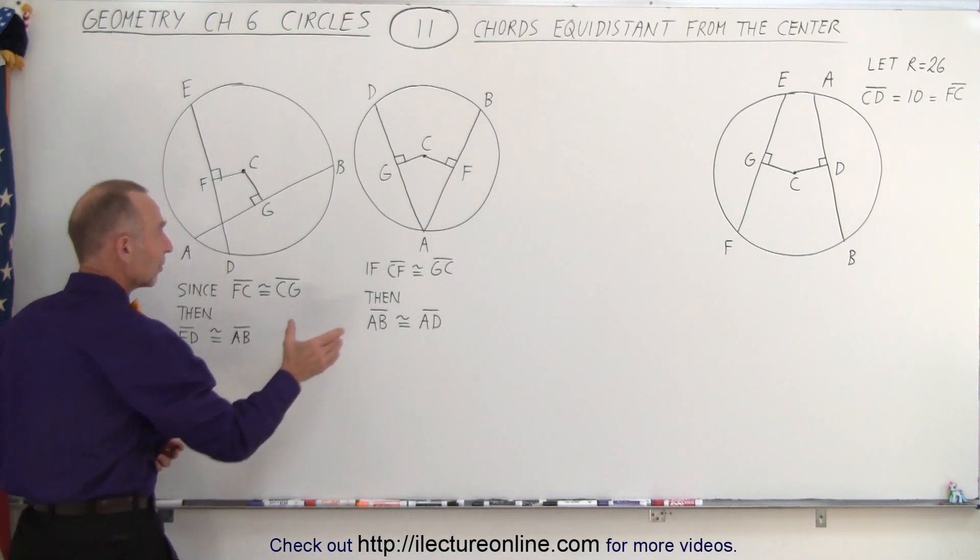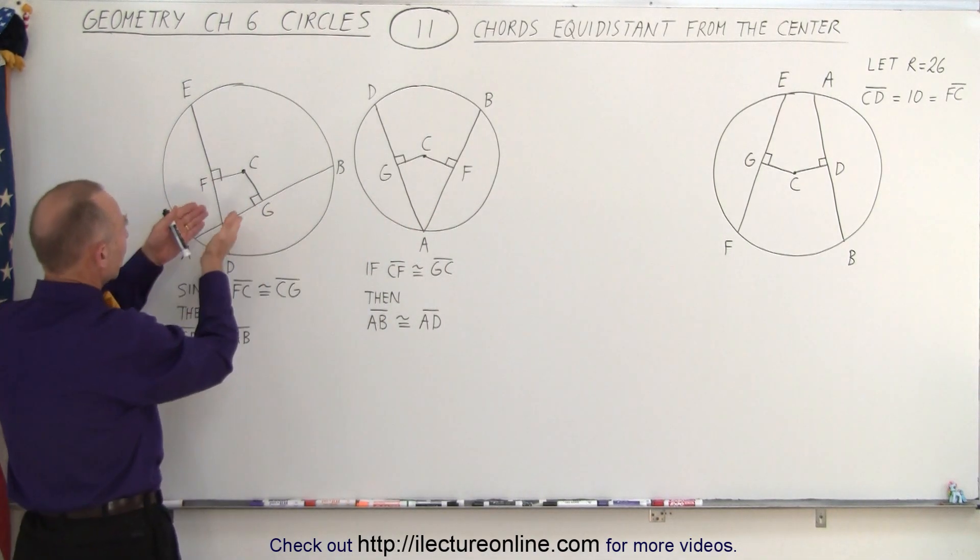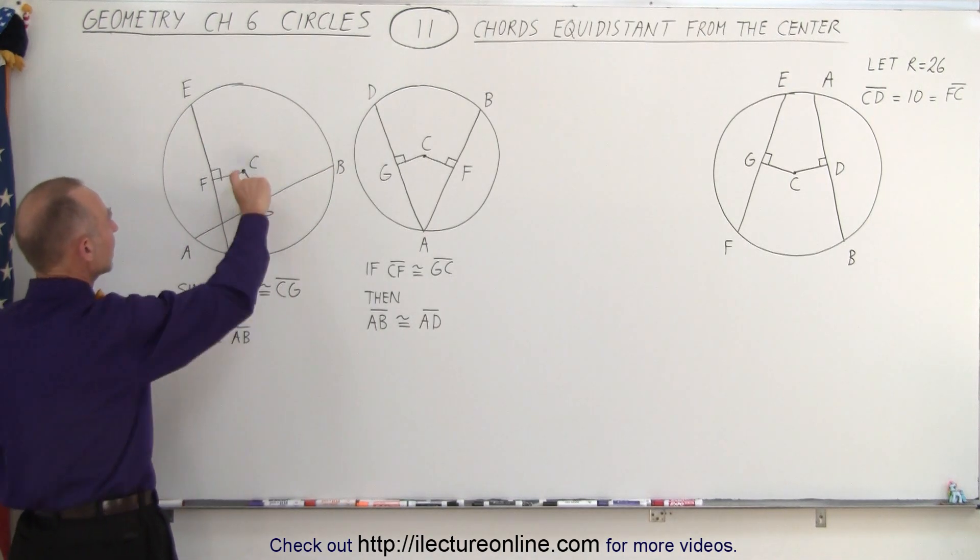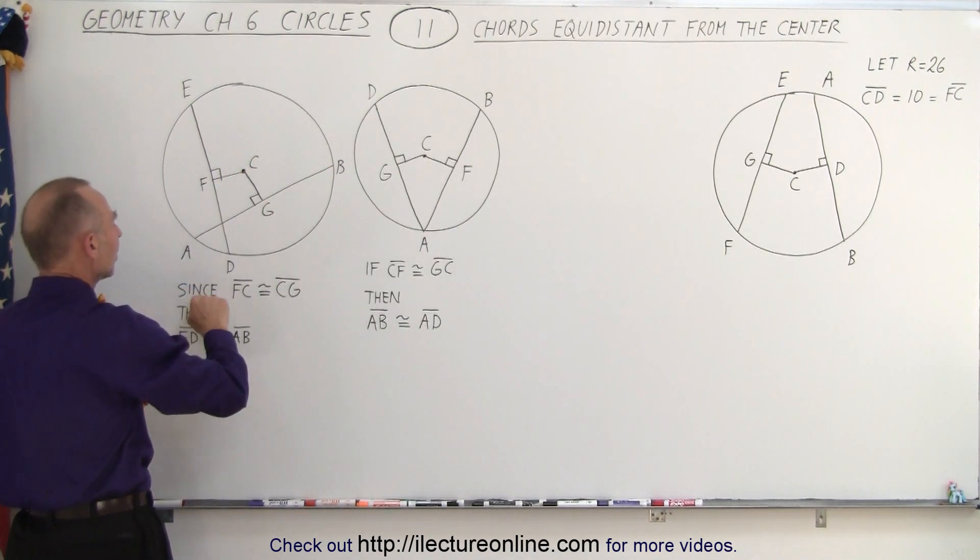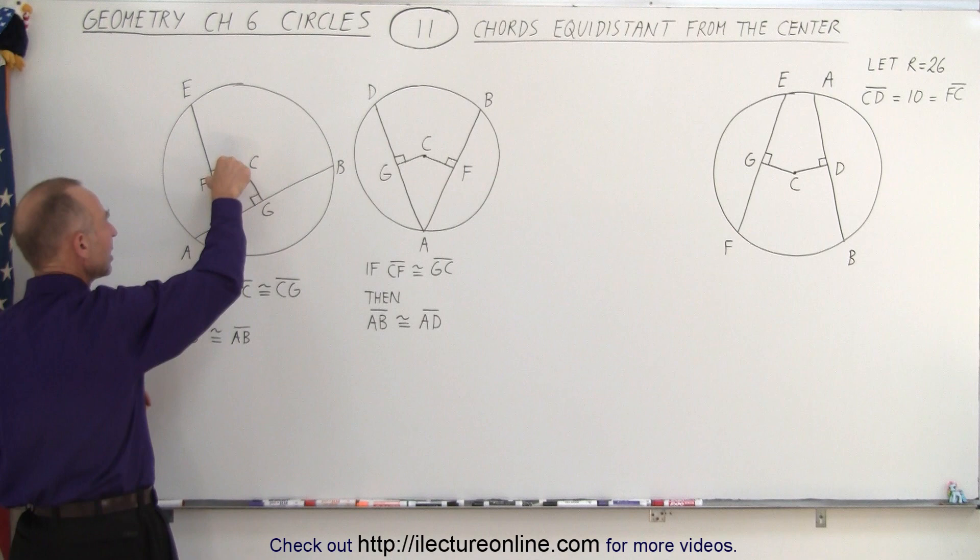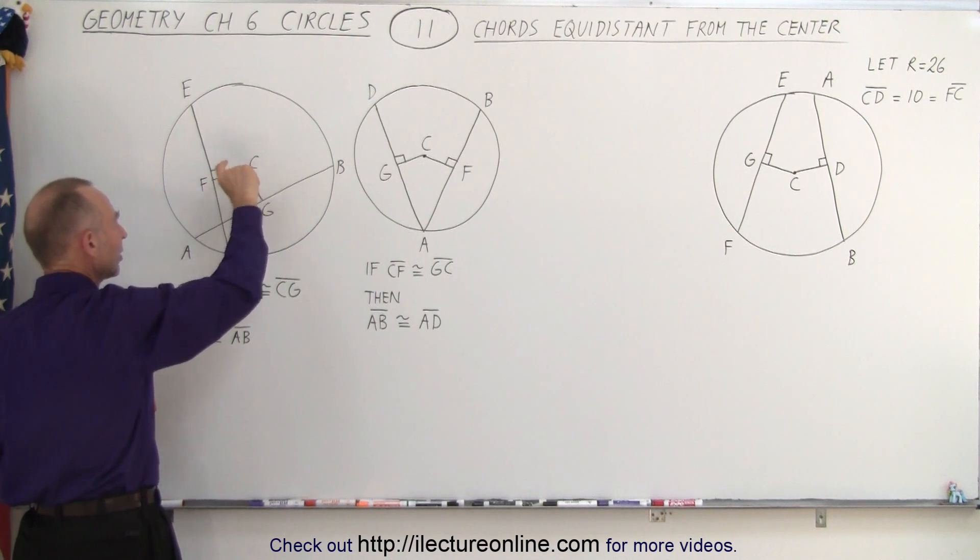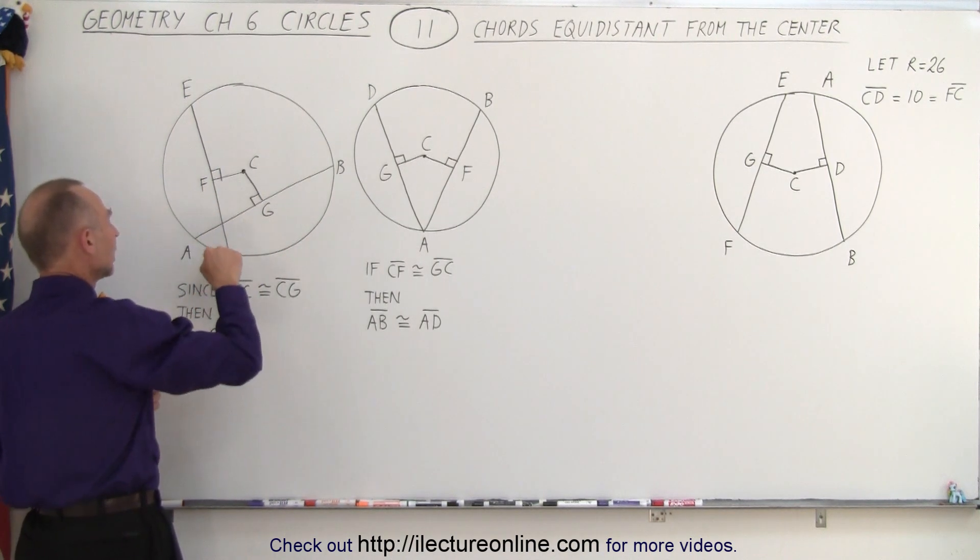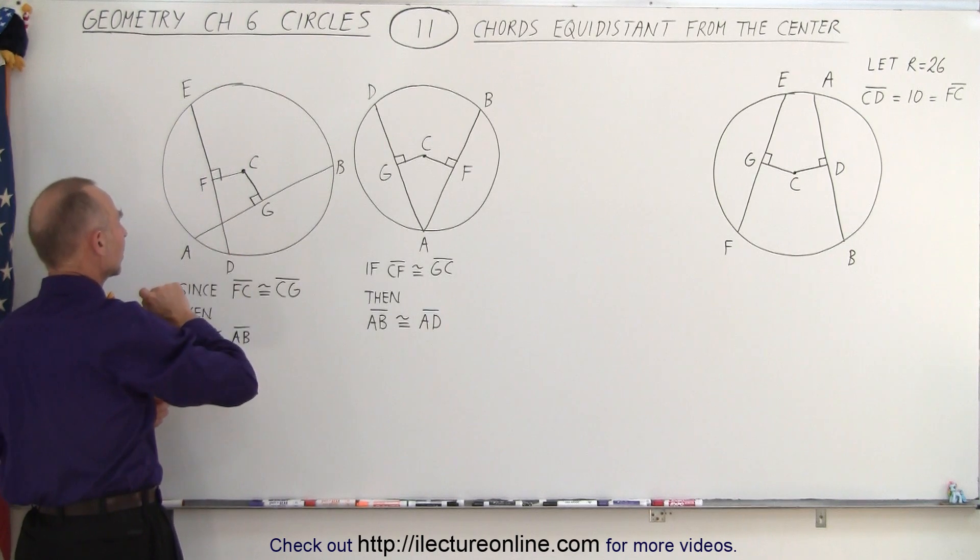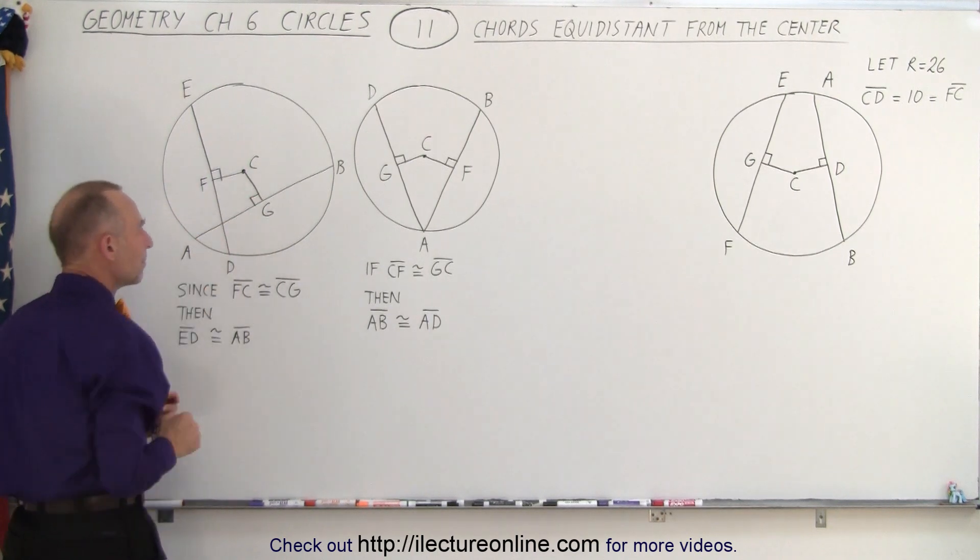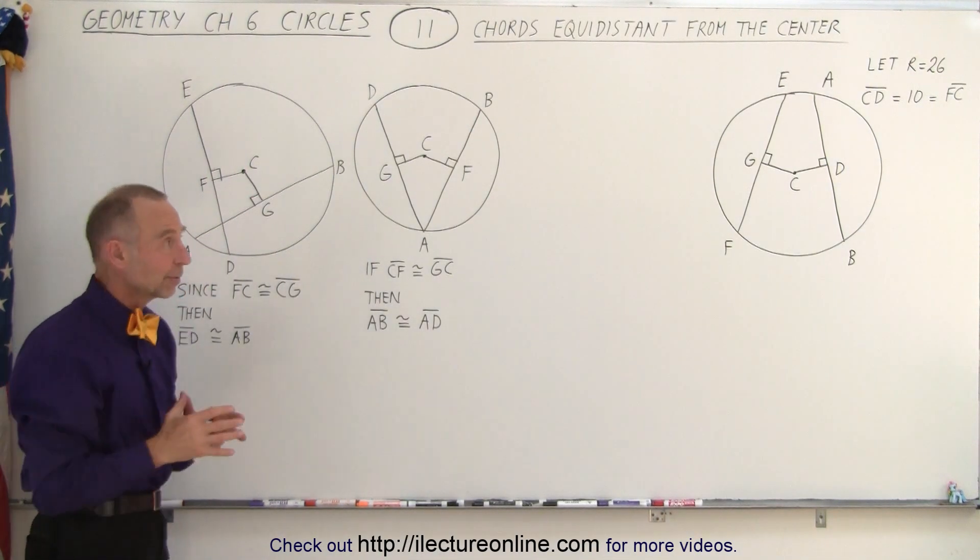It doesn't matter if it's depicted like this or if it's depicted like this where they cross one another. Again, here we have these two lines and since we say that FC is congruent to CG, then we conclude that ED has to be congruent to AB. And so that is what we can get from that information.